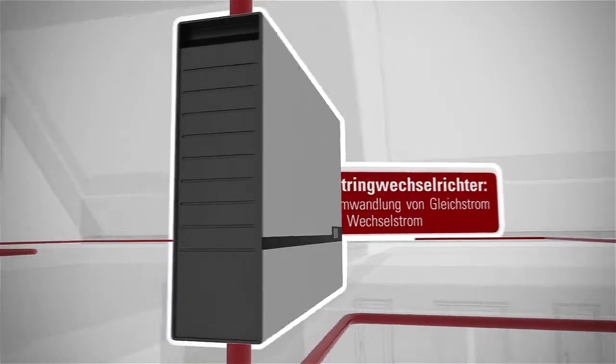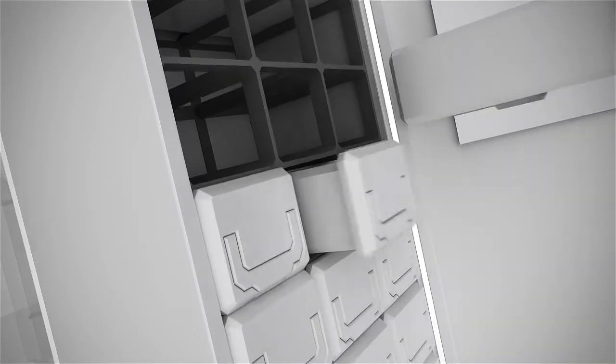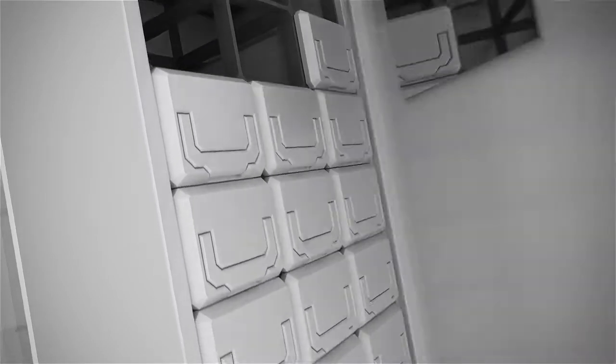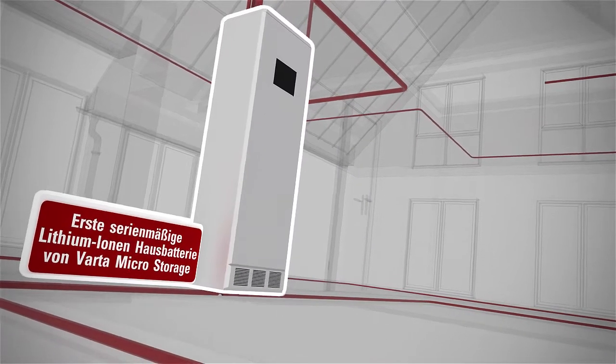Im Hauswirtschaftsraum befinden sich die Herzstücke der Energieversorgung. Zunächst wird die Batterie geladen, um die Energie später bedarfsgerecht entnehmen zu können. Durch den modularen Aufbau kann die Ladekapazität von 3,66 auf 10 Kilowattstunden erhöht werden.